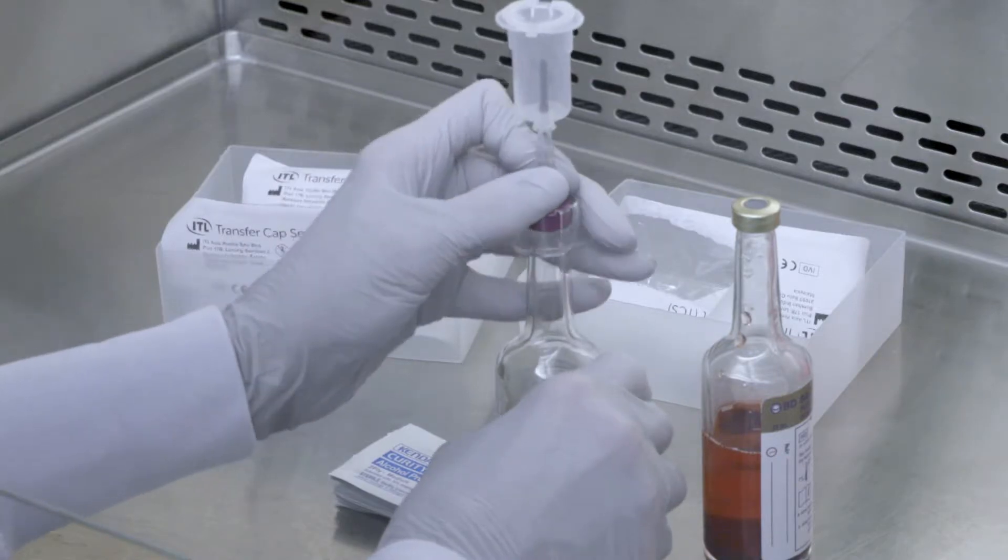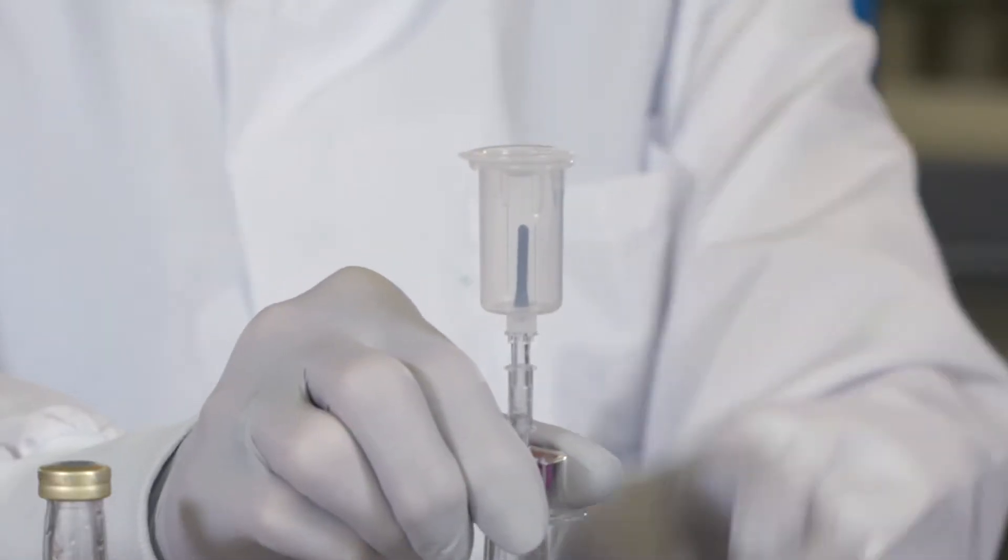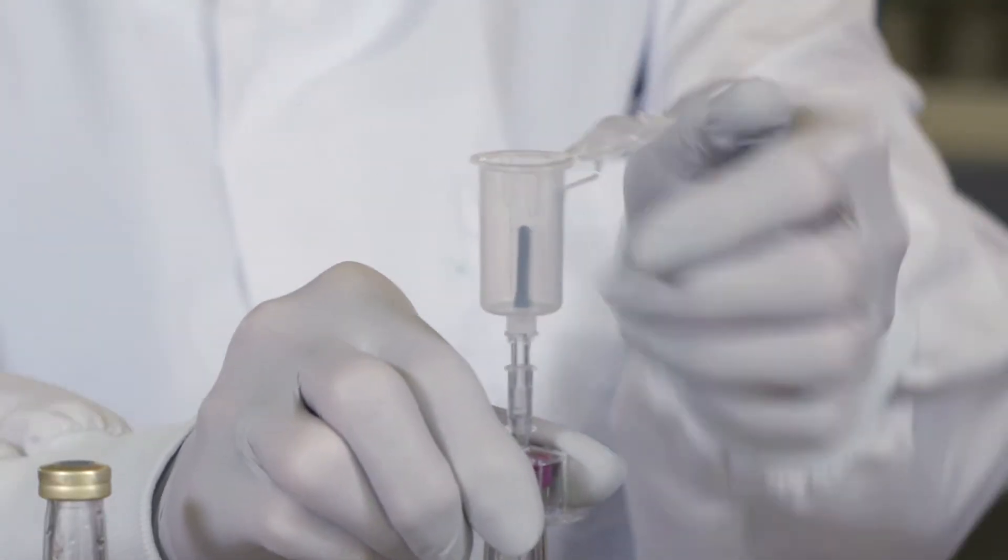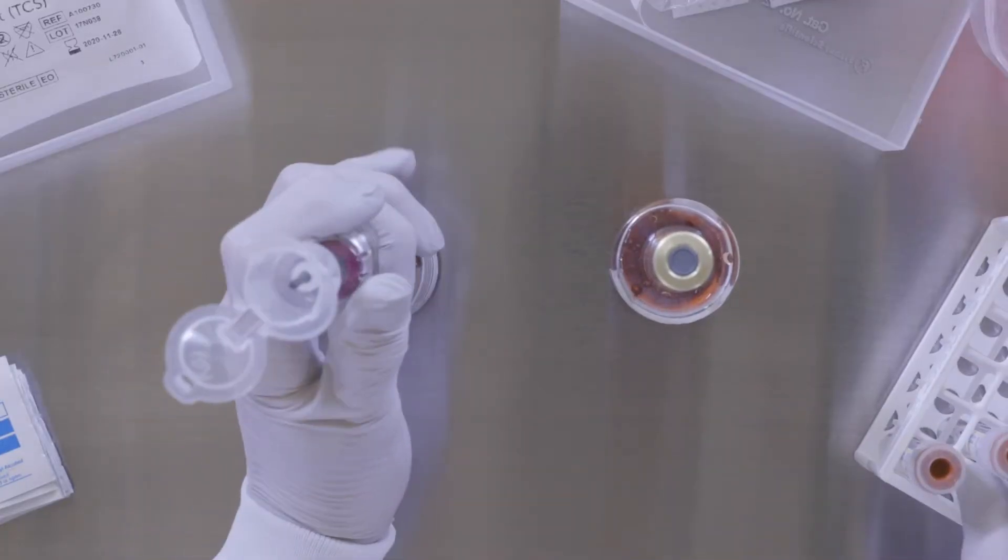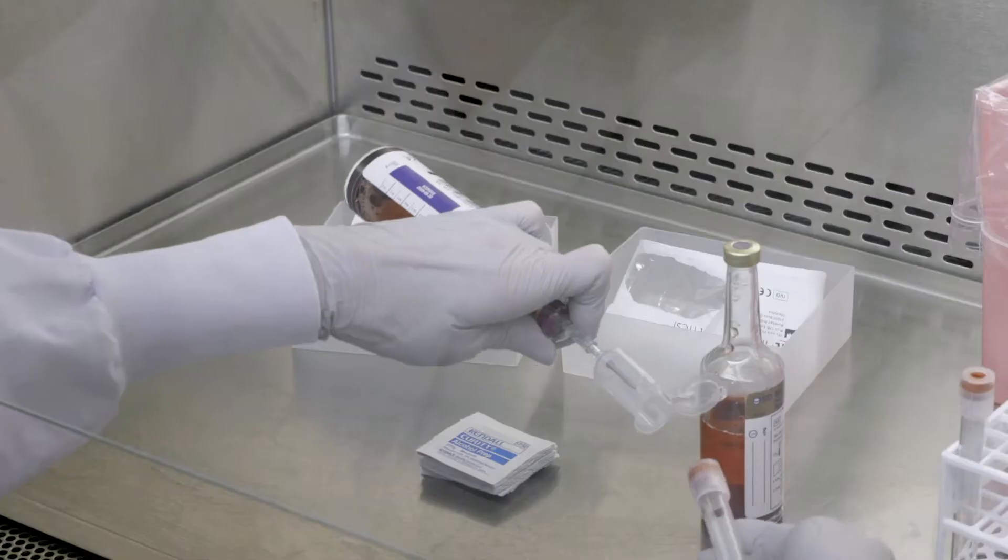Once the transfer capset tip is inserted into the culture bottle, open the safety lid on the tube holder end. Tilt the culture bottle so that the tube holder is now pointing downward.